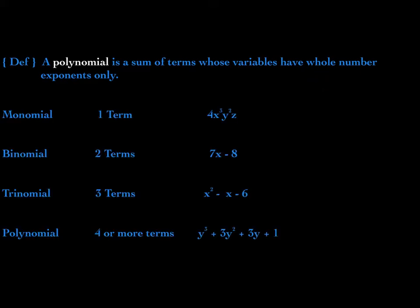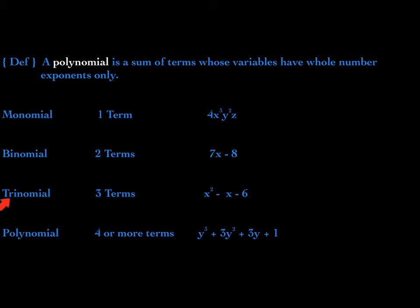Here are some classifications of polynomials. A monomial is a polynomial of one term — the prefix mono means one. A binomial is a polynomial of two terms, the prefix bi meaning two. 7x is one of the terms, negative 8 is the second. Remember that terms are separated by addition or subtraction signs. A trinomial is a polynomial of three terms, the prefix tri meaning three.